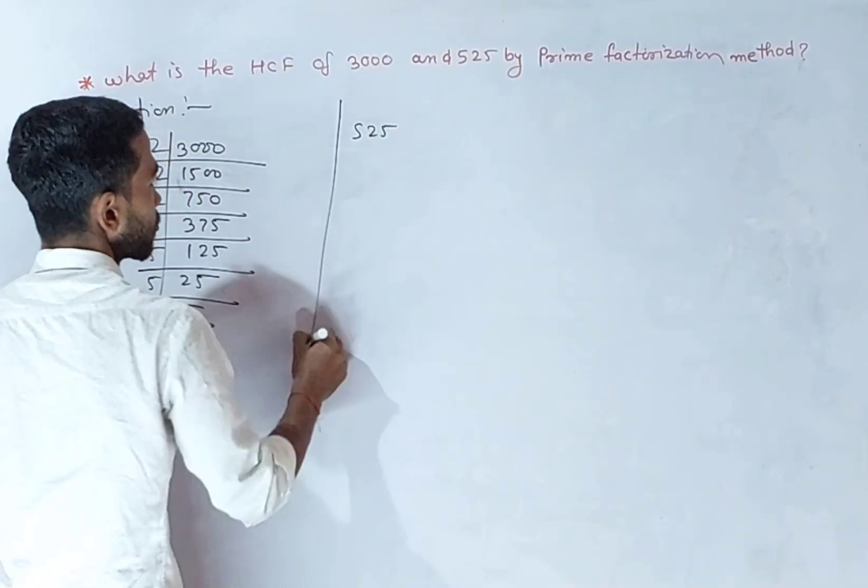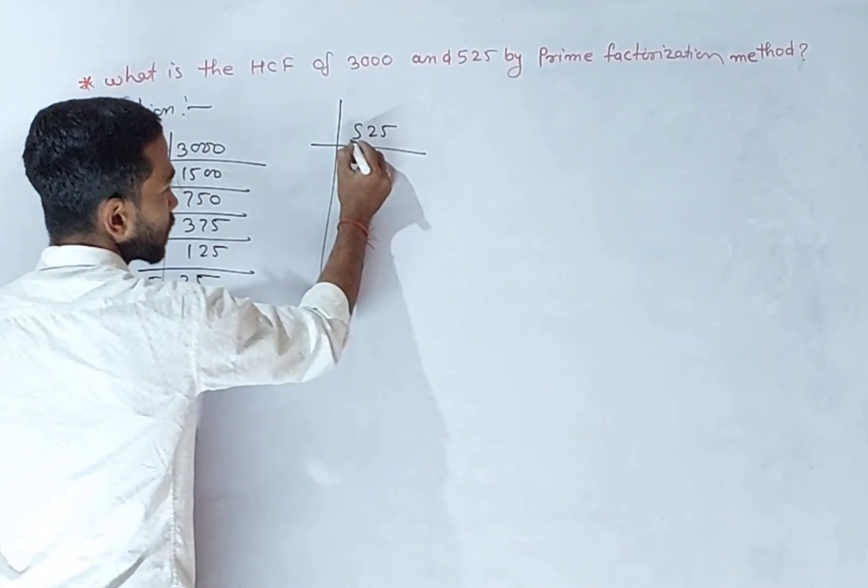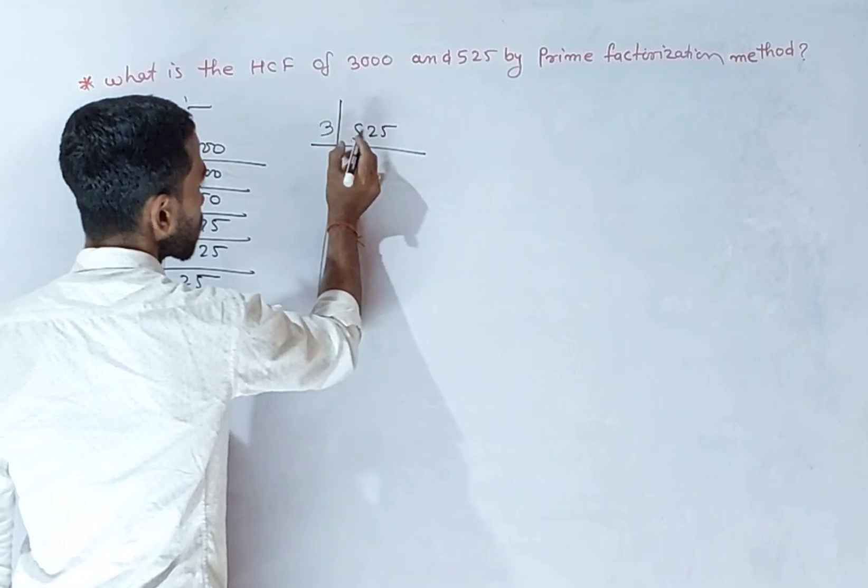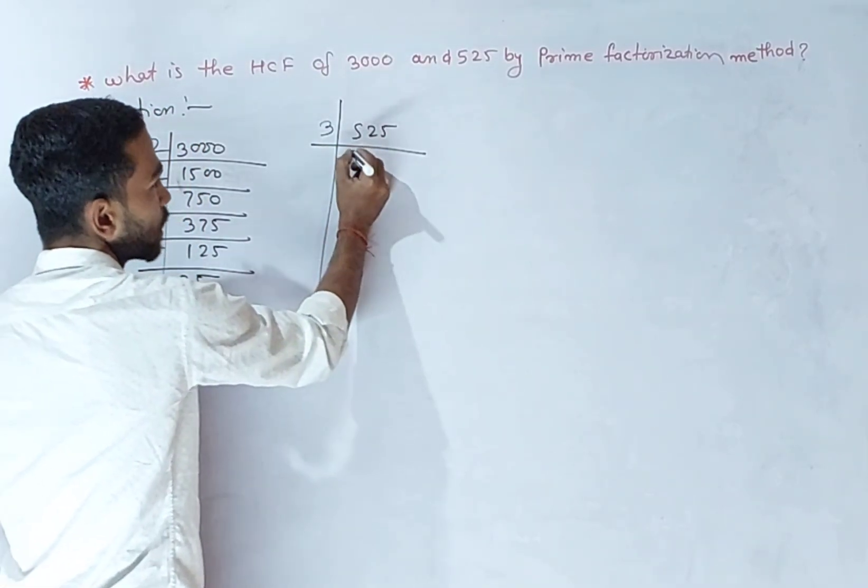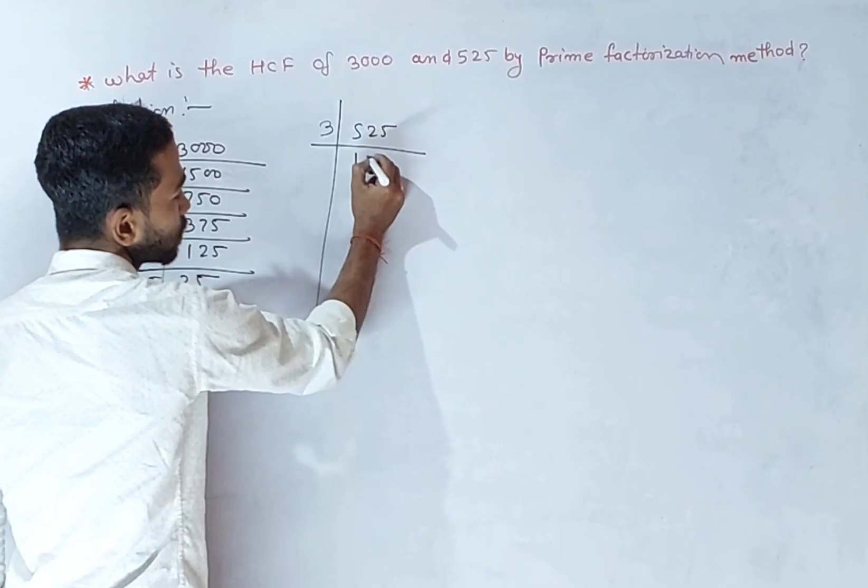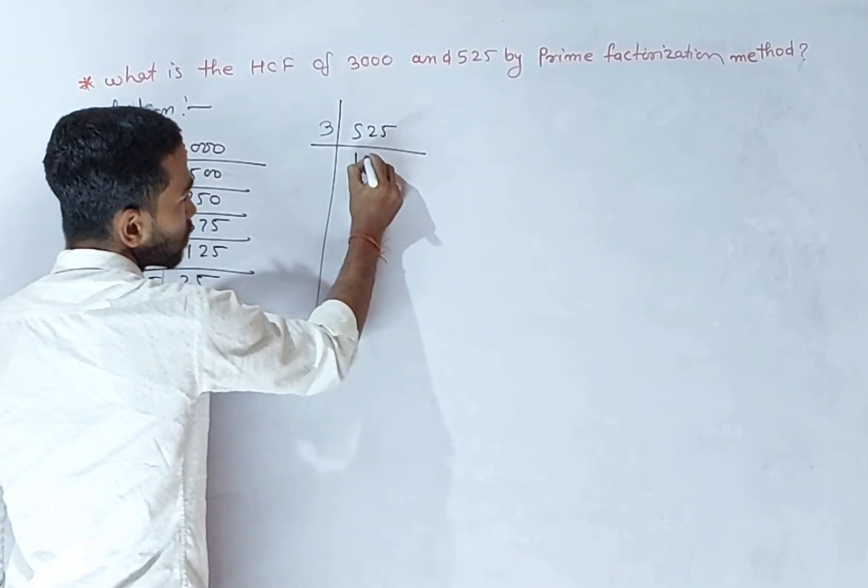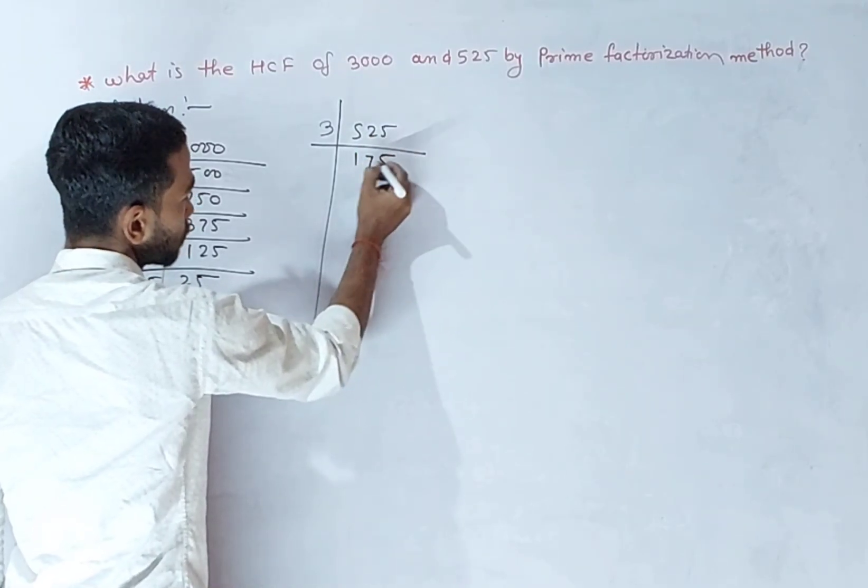525: 5 plus 2 plus 5 equals 12, divisible by 3, so 525 is also divisible by 3, giving 175; divided by 5, 35; divided by 5, 7.